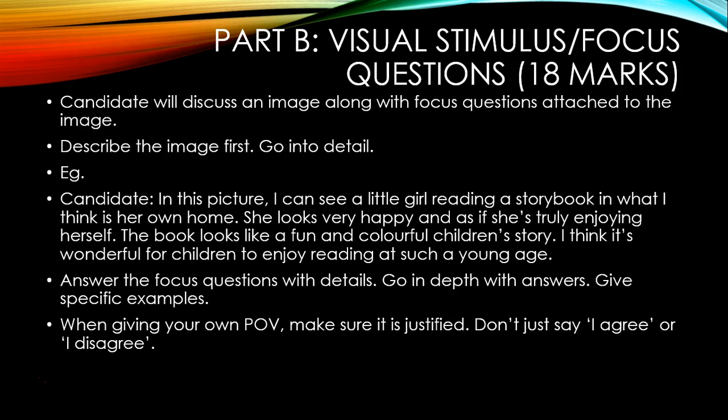The next part is Part B, also known as the visual stimulus or focus questions. You have 18 marks for this part. Basically, the candidate will discuss an image along with focus questions attached to the image. You should describe the image first — go into detail when describing it. An example is already written here of what you're supposed to do. Go in depth; don't just say what you see — talk about your opinions as well. Answer the focus questions with details and go in depth with your answers.